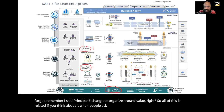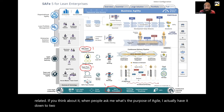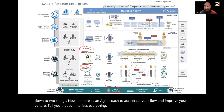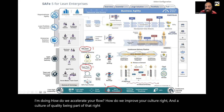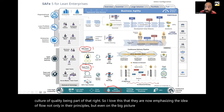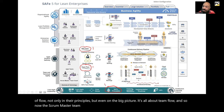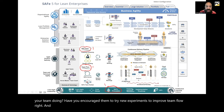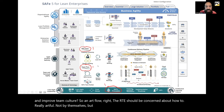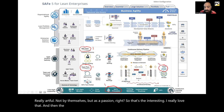Remember Principle 6 changed to 'organize around value'? All of this is related. When people ask me what's the purpose of agile, I have it down to two things: I'm here as an agile coach to accelerate your flow and improve your culture. So I love that they're now emphasizing the idea of flow — not only in their principles but even on the big picture. It's all about team flow. Now the Scrum Master Team Coach should be asking: what are you doing to accelerate team flow? And the RTE should be concerned about how to accelerate ART flow.